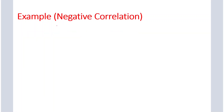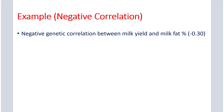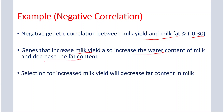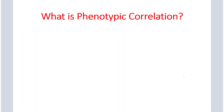Now we will see the example of negative genetic correlation. Negative genetic correlation is observed between milk yield and milk fat percentage, which is about negative 0.3. In this case, the genes that increase milk yield also increase the water content of milk, but these genes decrease the fat content. So selection for increased milk yield will decrease the fat content in milk.